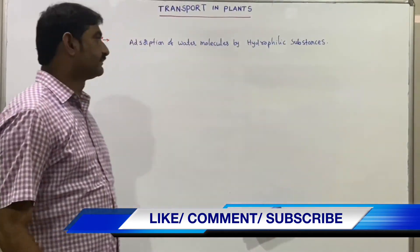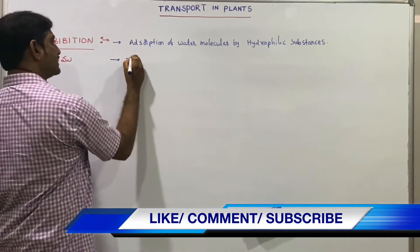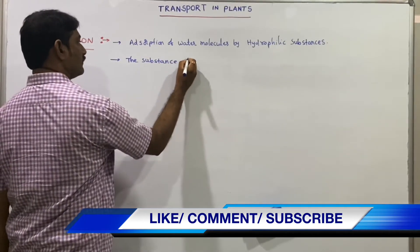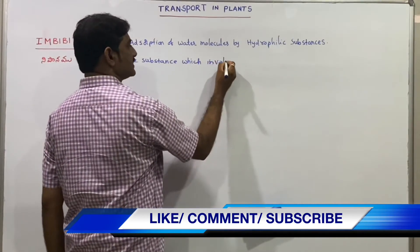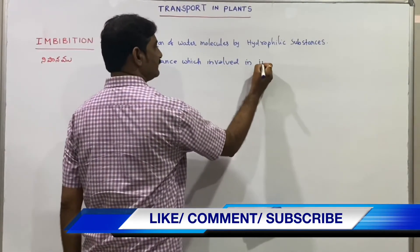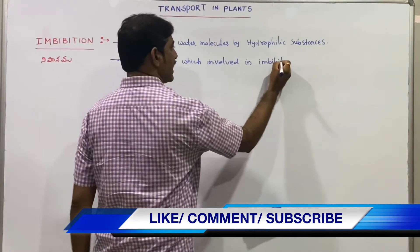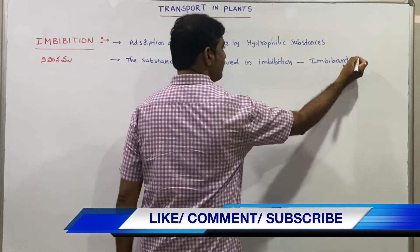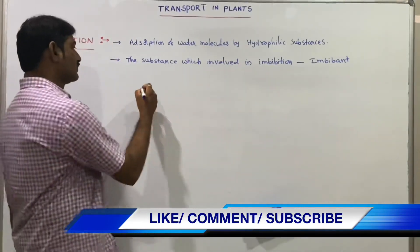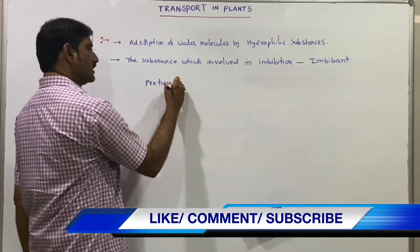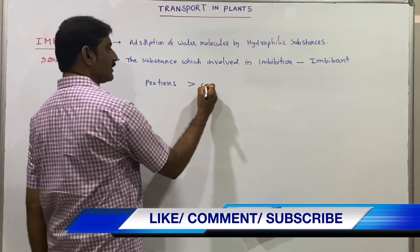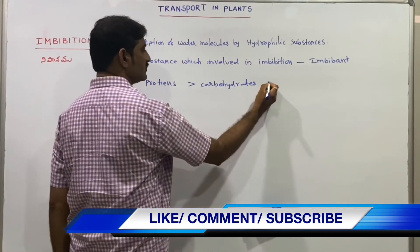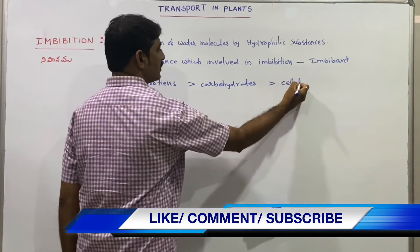The substance which is involved in imbibition is known as an imbibant. Proteins, carbohydrates, and cellulose are known for their imbibition capacity.